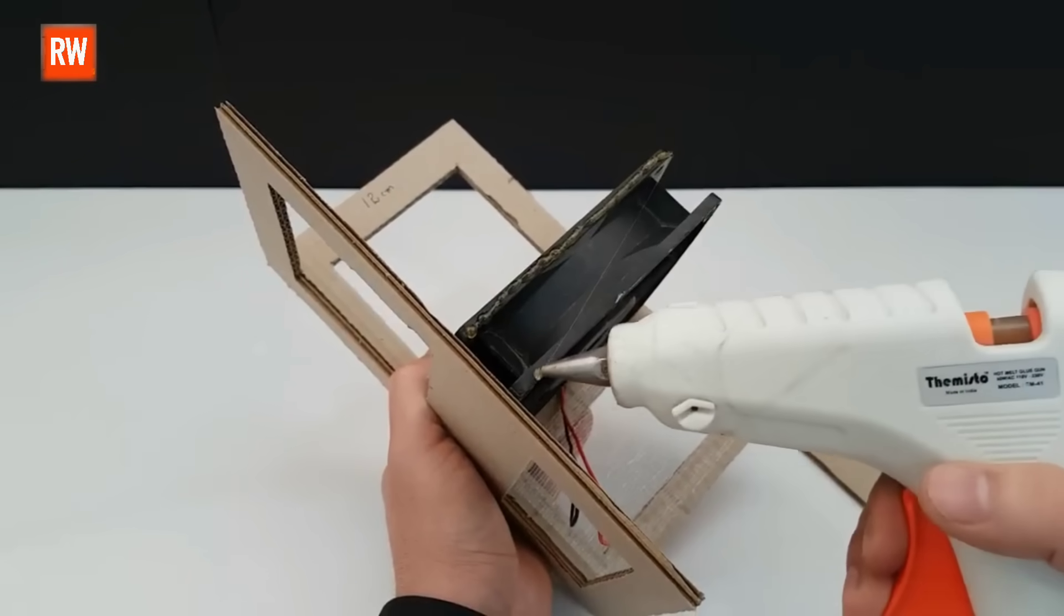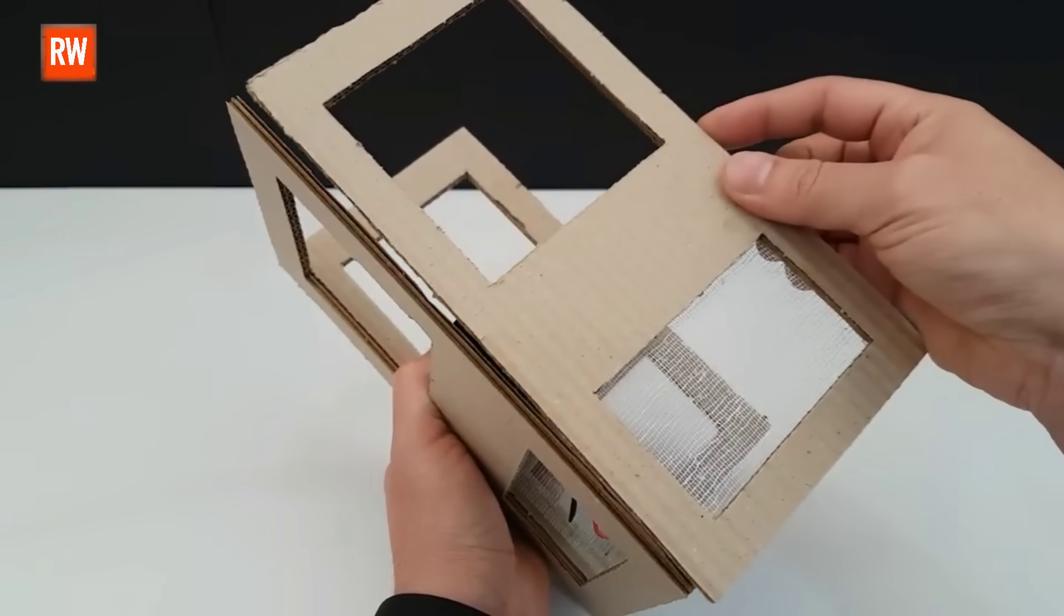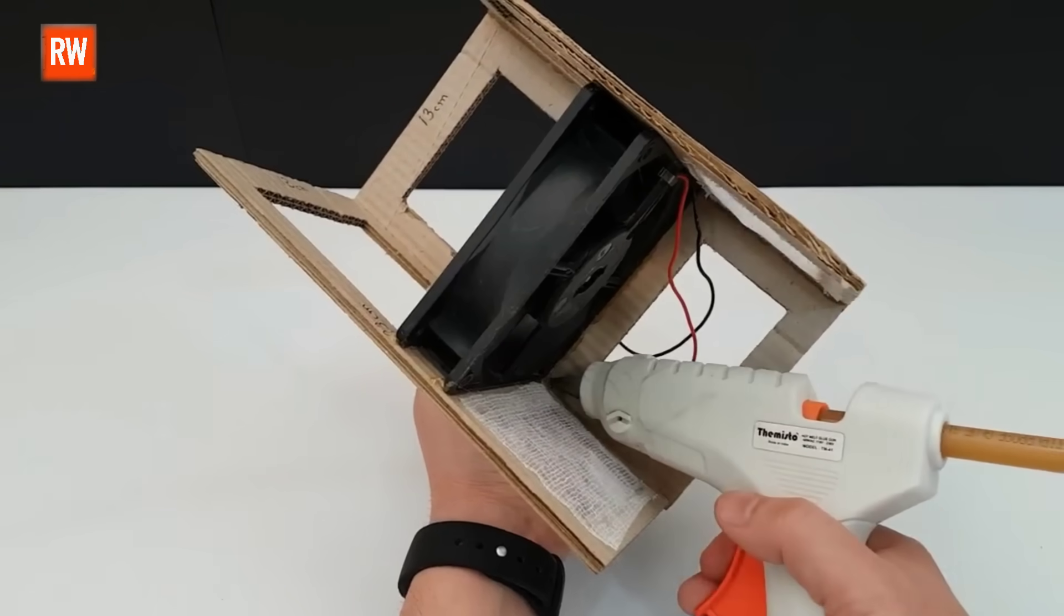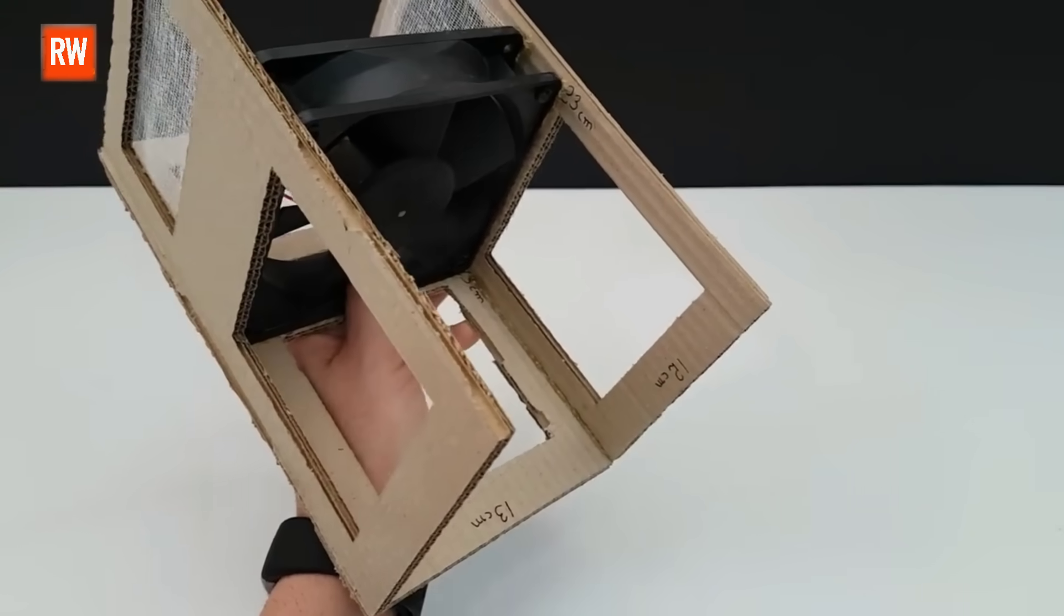Each piece will be firmly attached using a hot glue gun to ensure everything stays in place, and the structure remains strong and stable during use. Take your time with the alignment so the final build looks neat and functions well. Once all the cardboard pieces are properly assembled and secured in place...